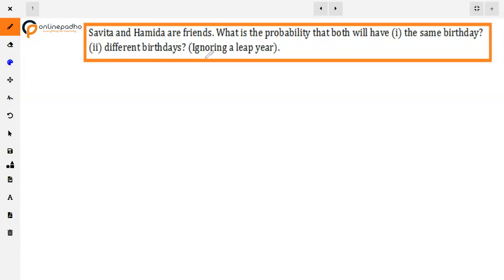The question is: Samita and Hamida are friends. What is the probability that both will have the same birthday or different birthdays, ignoring a leap year? If we ignore the leap year, we have to find that two friends have the same birthday on the same day.